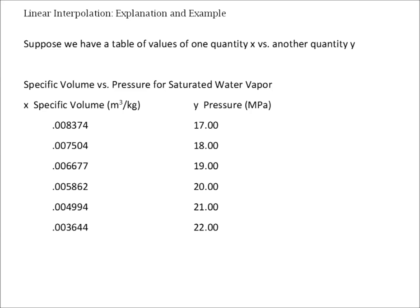Now, with a table like this, if we wanted to find the pressure at a specific volume that was already listed in the table, for example, if we wanted to know the pressure of saturated water vapor for a specific volume of .007504 cubic meters per kilogram, then we could read that directly off the table. It would be 18.00 megapascals.